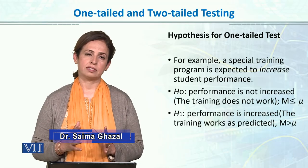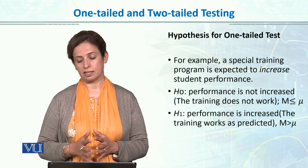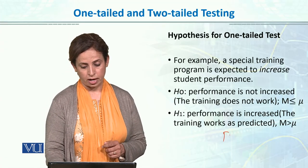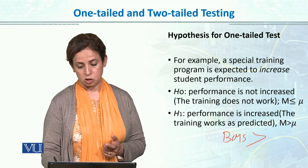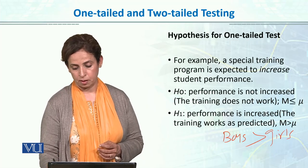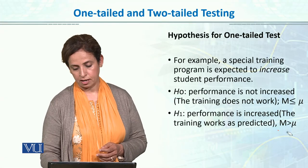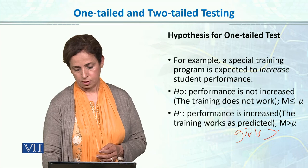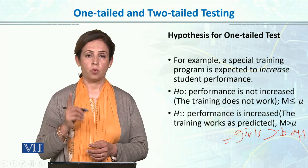In SPSS, by default we use a two-tail test. But when we test manually and we have a clear-cut directional hypothesis — for example, that boys are smarter than girls, or that girls are smarter than boys — then we use a one-tail test.